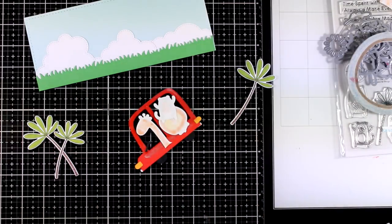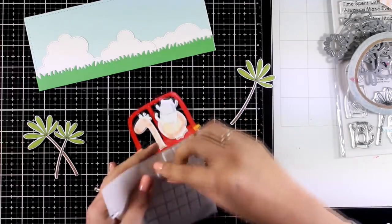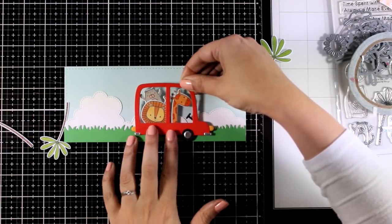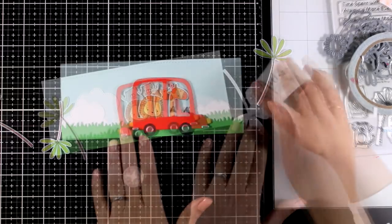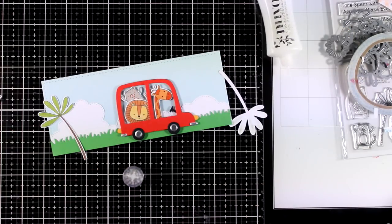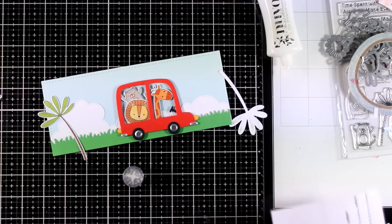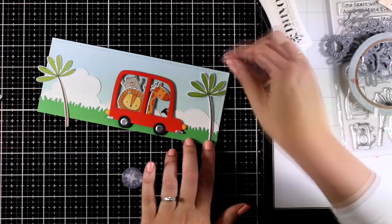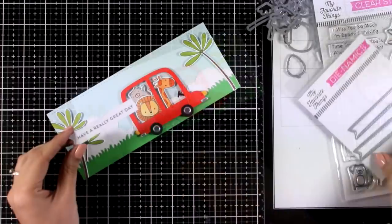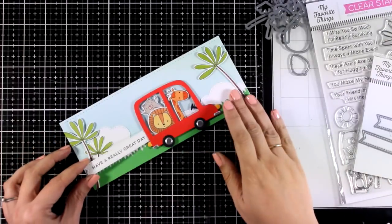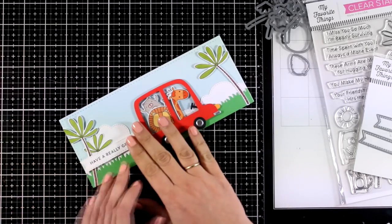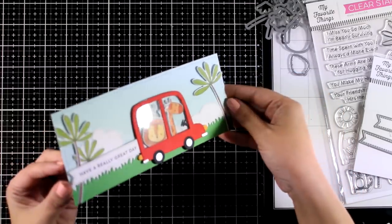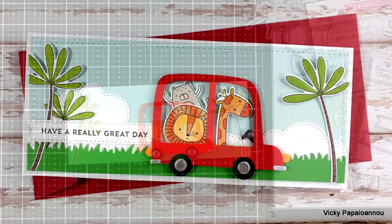I managed to fit inside 3 of the critters. Remember that if you don't have the acetate for the glass then you can have their heads popping out of the car. I'm going to use foam squares at the back and stick the car on top of my background. In a standard card size just this big car with the critters inside and the background would be enough. However in a long card like this one I felt that it needed something extra, so I die-cut and stuck down the 3 trees. For my sentiment I went with Have a Really Great Day and I did use the stitched banner dies to die-cut it. Finally I'm going to stick this panel on top of a slimline card that is slightly bigger so that I will end up having a white border all around.